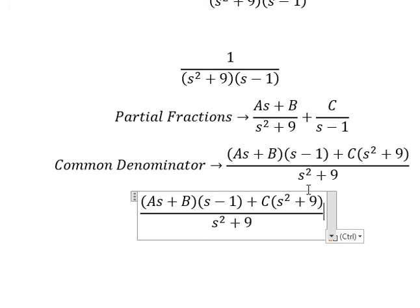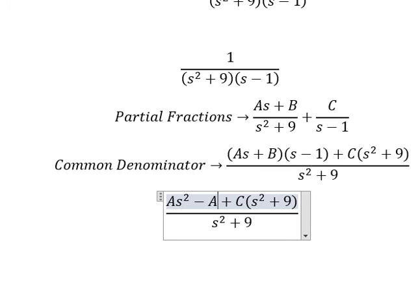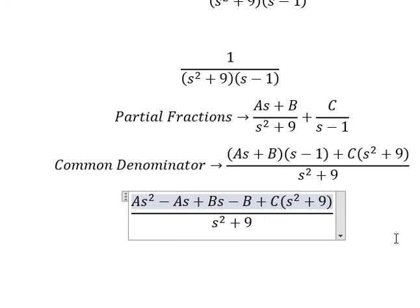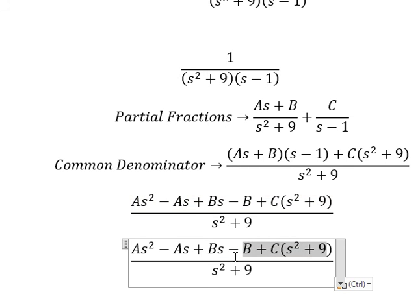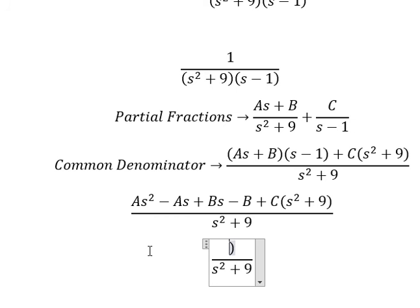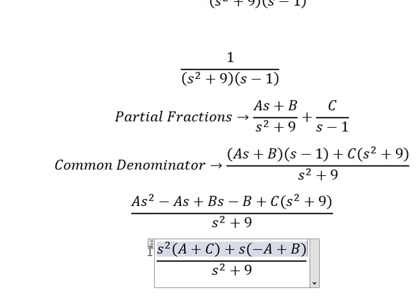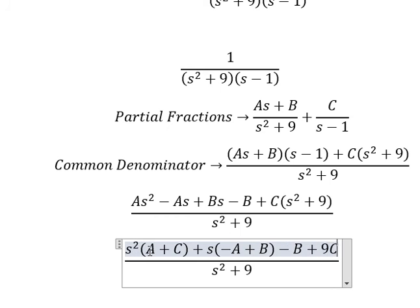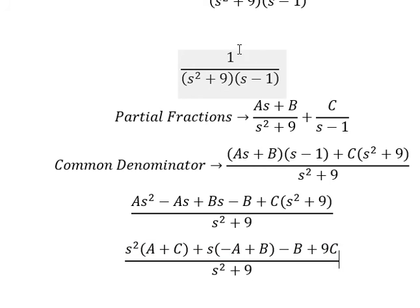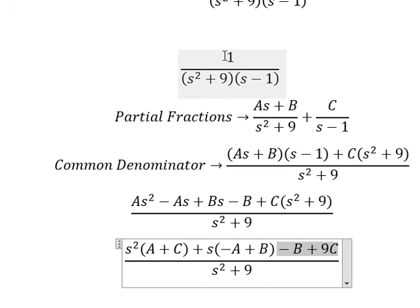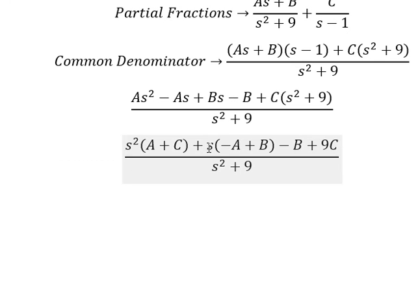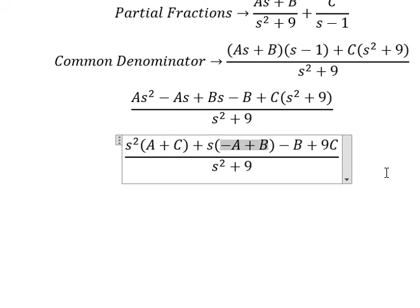Next, we need to expand this one. Next, we need to arrange based on the terms of S. About S squared, we have A plus C. About S, we have negative A plus B. About the constant terms, we have negative B plus 9C. Now we need to compare coefficients. We just have only number 1, so negative B plus 9C equals to number 1. We don't have S and S squared, so A plus C and negative A plus B each equal to number 0.